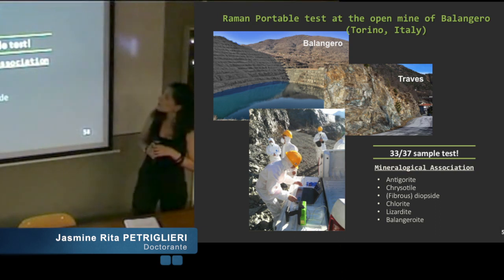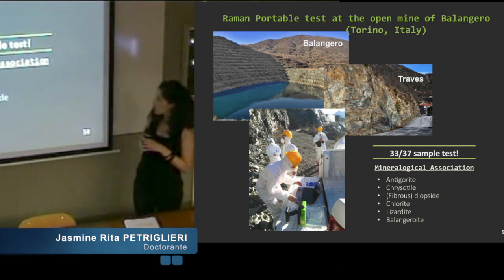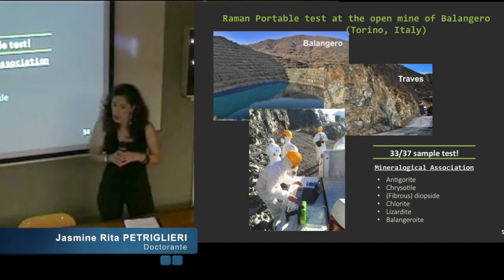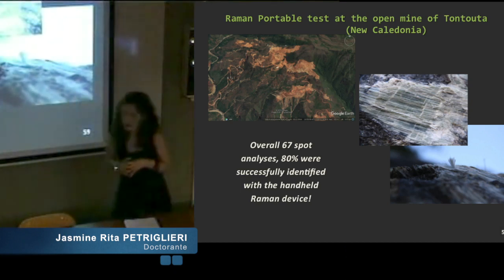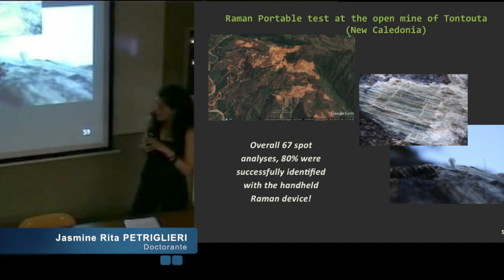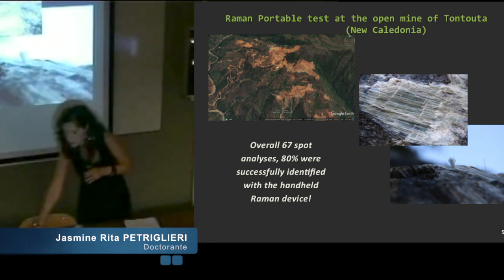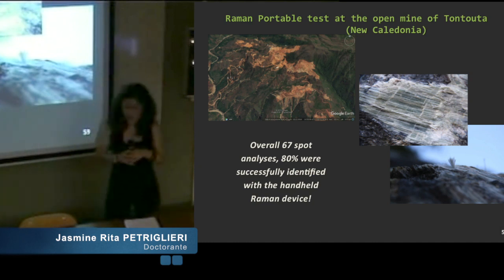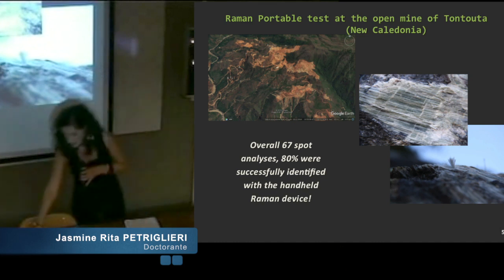The portable Raman was tested firstly at the open mine of Balangero near Turin. On 37 sample test spot analyses, 33 allowed to identify the typical mineralogical association. The portable Raman was also tested in New Caledonia at the open mine of Don Tuta, and on 30 sample test spots, 20 gave a positive response allowing identification of the mineralogical association. Overall, 80% of analyses were successfully identified with the handheld Raman device.